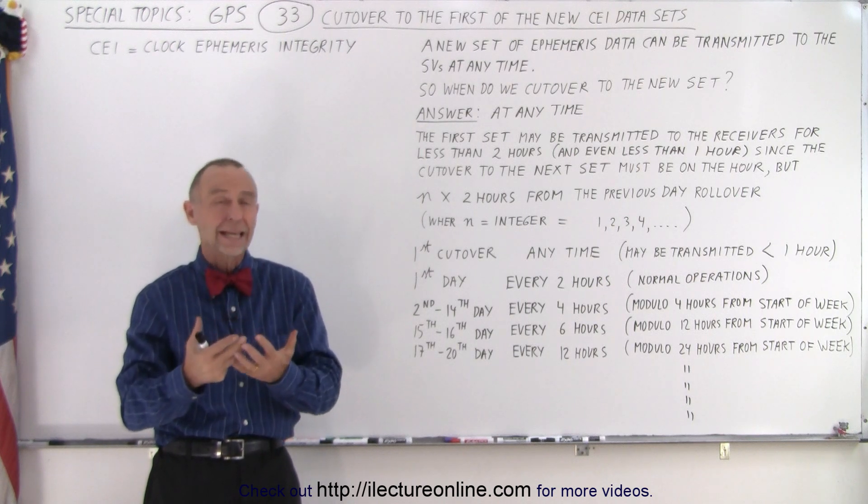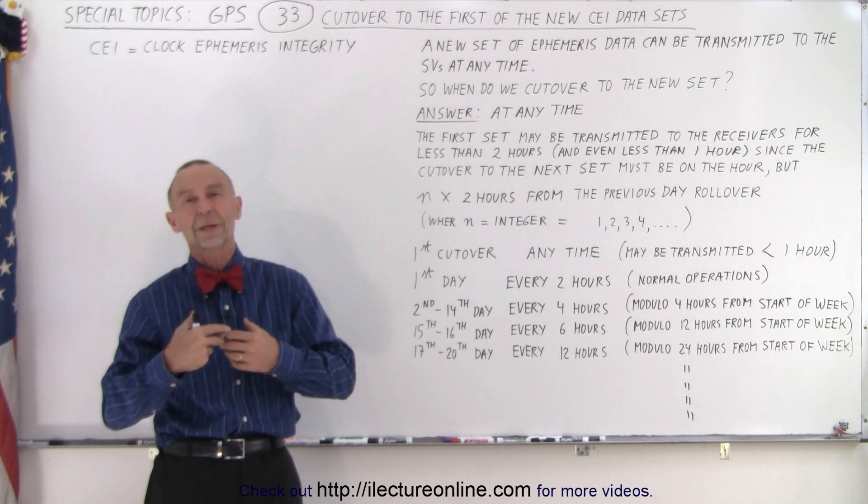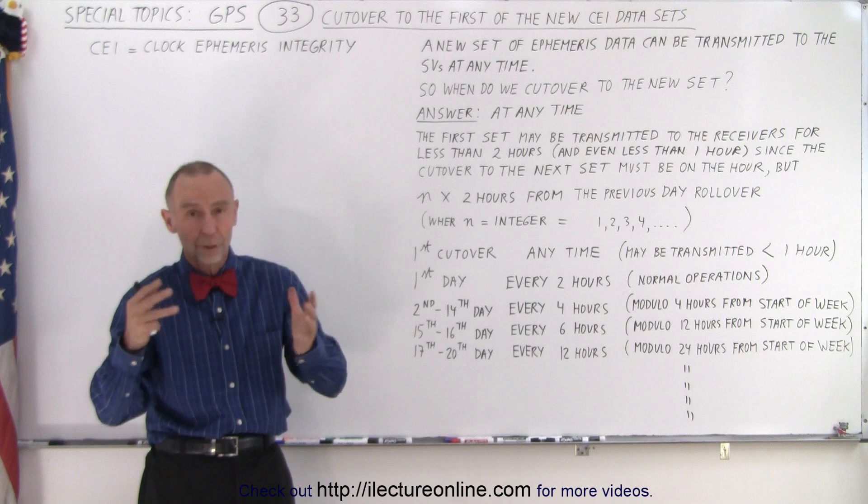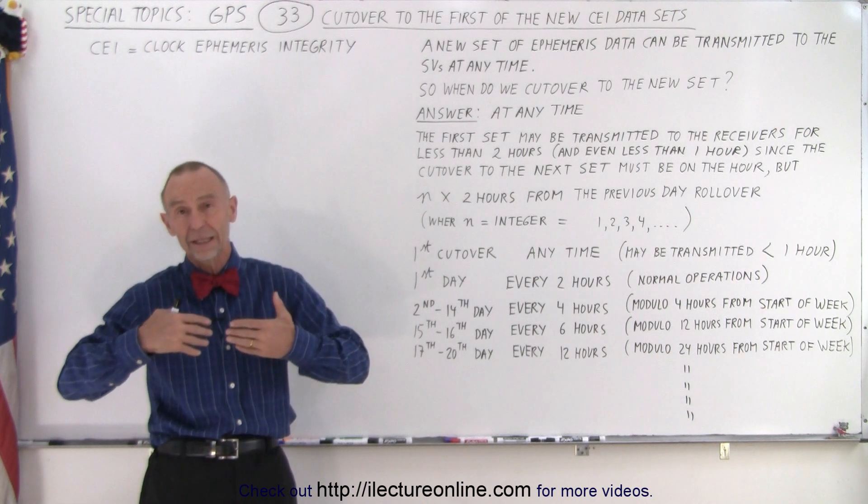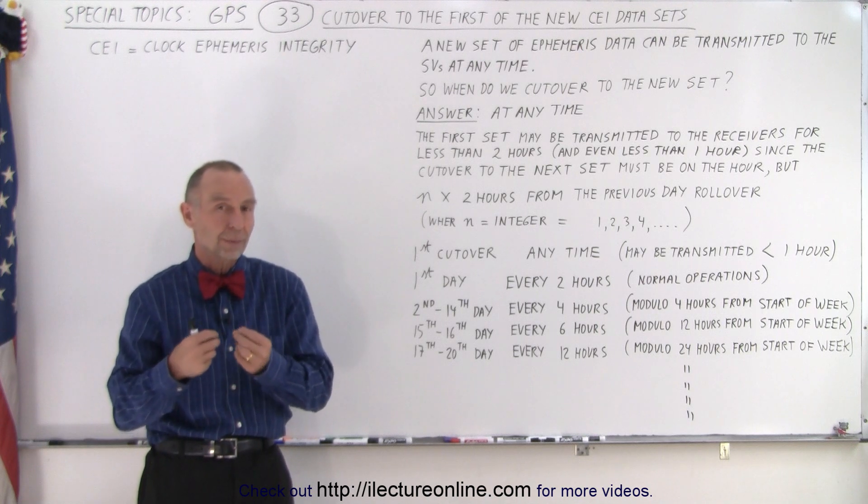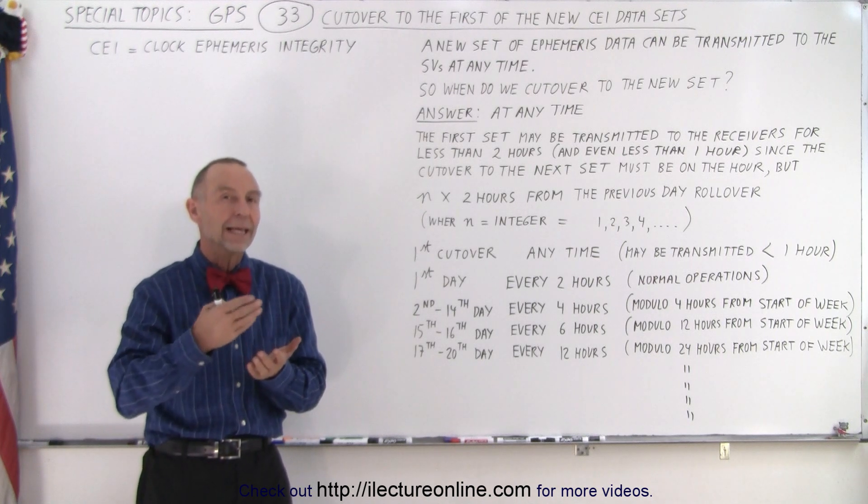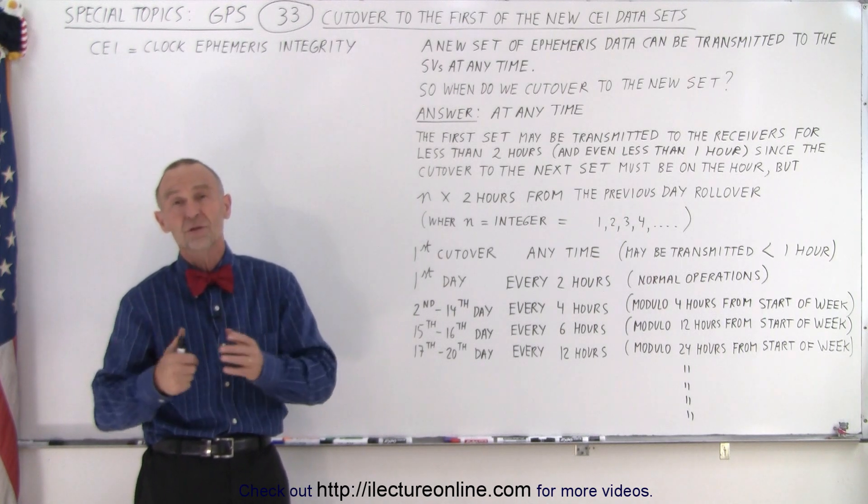But we send a lot of data up in advance just in case we cannot make another transmission for whatever reason, and so the SVs can continue transmitting ephemeris data that is reasonably accurate on a daily basis for the next two months or so.